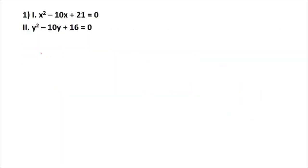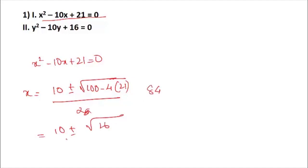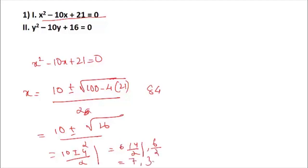Let me show the first example using the traditional method. For the equation x² − 10x + 21 = 0, the solution is x = (10 ± √(100 − 84)) / 2 = (10 ± √16) / 2 = (10 ± 4) / 2. This gives x = 14/2 = 7 and x = 6/2 = 3. So the two solutions are 7 and 3.